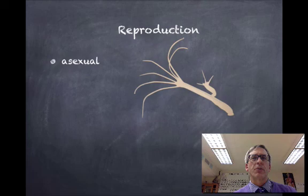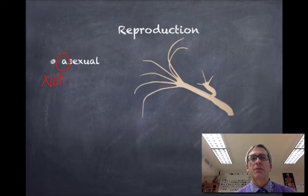So let's get started with asexual reproduction. If I put the letter A in front of a word, it means not. So this is not sexual reproduction. In other words, there's no sperm cell, there's no egg cell, there's no fertilization, there's no zygotes. It's asexual reproduction.